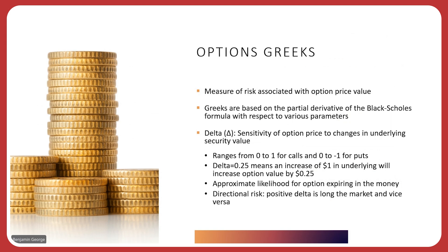For example, say Google is at $1,481 and the option we're selling has a Delta of 0.25. That means if Google increases to $1,486, that option value should increase by $1.25. Another interpretation of Delta is the approximate likelihood for the option expiring in the money. A third interpretation is directional risk: a positive Delta indicates you're long the market or contract, and a negative Delta means you're short the contract you're selling.